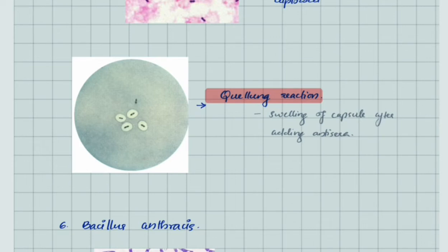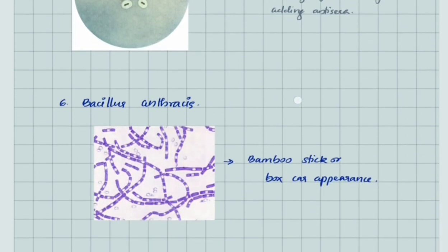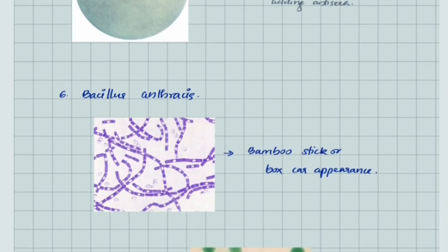Bacillus anthracis has a typical bamboo stick or boxcar appearance due to the presence of endospores within it.